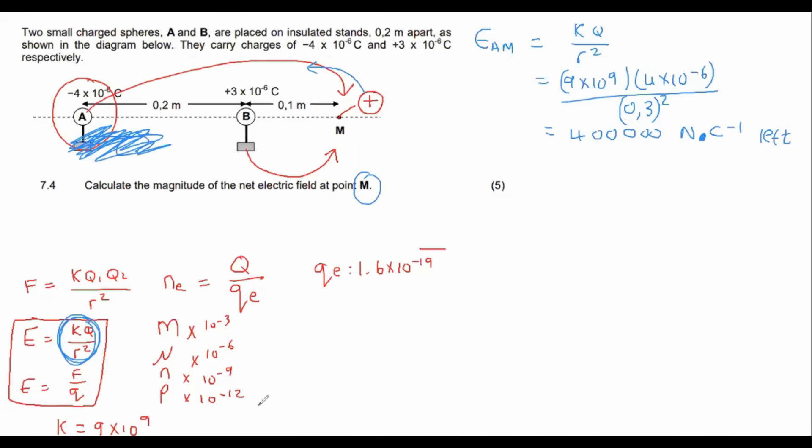Okay, so now we're going to look at the force of the electric field of B on M. And so it's going to be the same formula. Three times 10 to the minus six. The distance 0.1. Please don't forget your squares. Okay, big number. 2,700,000 N dot C minus one. Okay, now B is positive. M is positive. So B and M are going to push each other away. So B is going to be pushed to the left. M is going to be pushed to the right. So we don't care about B. So we're going to say to the right.